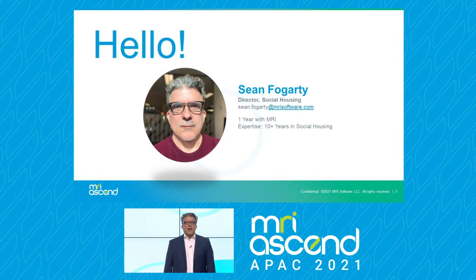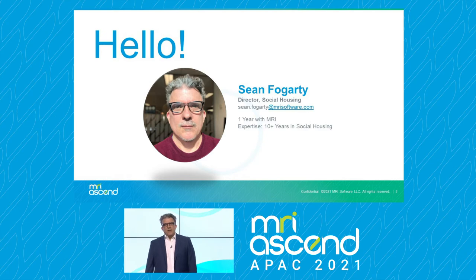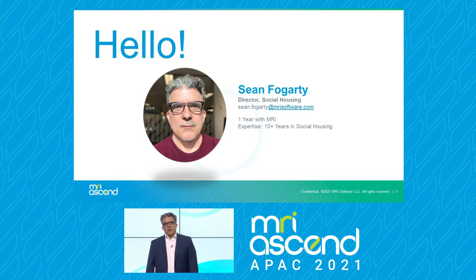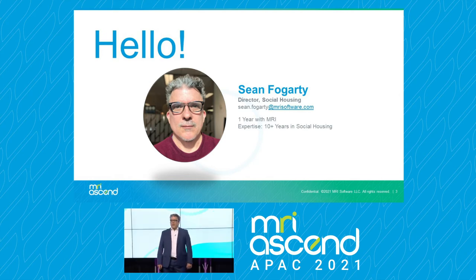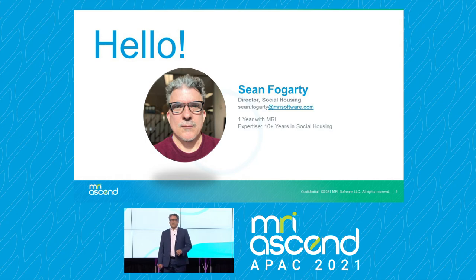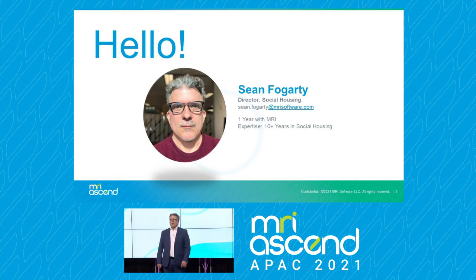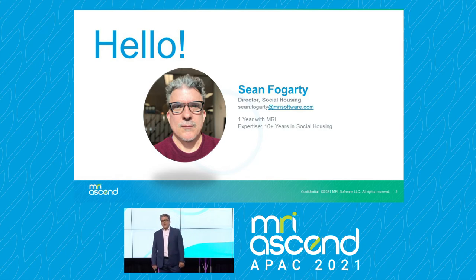My name is Sean Fogarty and I'm the Director of Social Housing for MRI in the APAC region. I'll give you a little bit of an intro and a background on my experience within the social housing sector. For the last almost eight years, I've been working in the social housing sector, originally with Kuipera, who was acquired by Castleton in 2016, and now with MRI who acquired Castleton last year. Prior to that, I worked within the social housing sector with the Department of Housing in New South Wales and then with Mission Australia Housing at Blacktown.